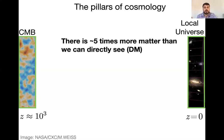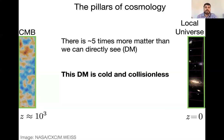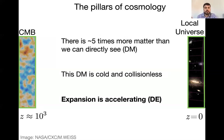From these two data sets, we've learned that there's five times more matter than we can directly see — we call this dark matter. This dark matter seems to be cold and collisionless, meaning it doesn't interact with us or seemingly with itself. It doesn't have thermal motions; it just seems to be cold. Also, the expansion of the universe is accelerating, which we call dark energy, but we don't really know what it is.